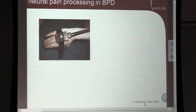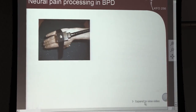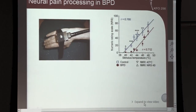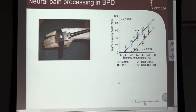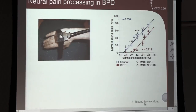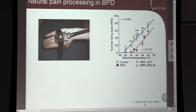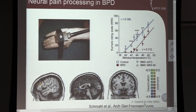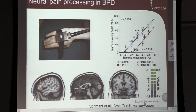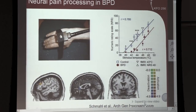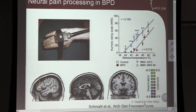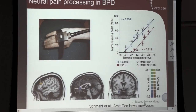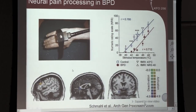We studied pain processing in borderline patients with devices such as a thermode placed at the back of the hand. We found that pain sensitivity is severely reduced — borderline patients show a marked shift of the pain sensitivity curve toward lower pain ratings. The brain activation pattern during pain stimulation showed that regions such as the amygdala and the anterior cingulate cortex are deactivated, which is the opposite of the normal pattern. This was one of the first hints that self-injurious behavior leads to a dampening of affective arousal and amygdala activity.